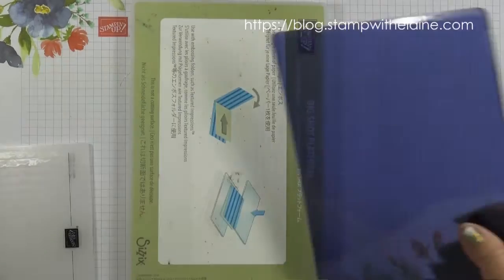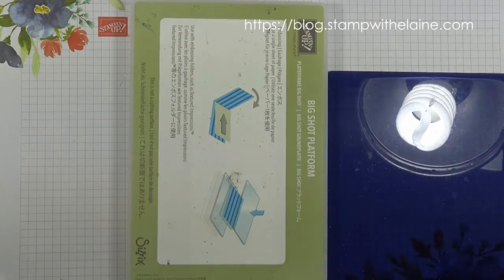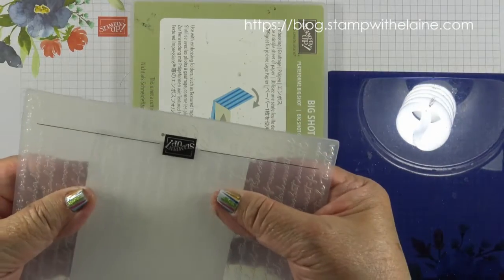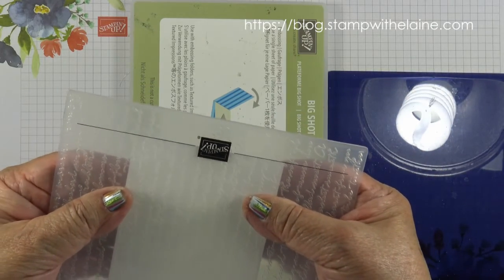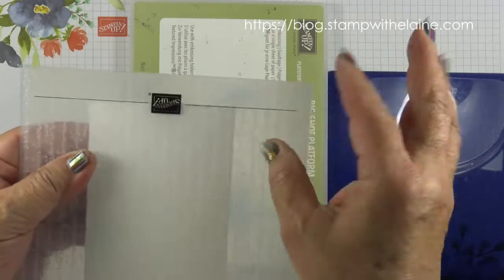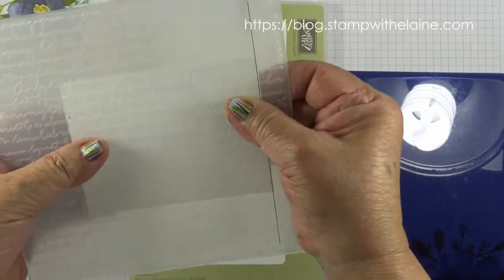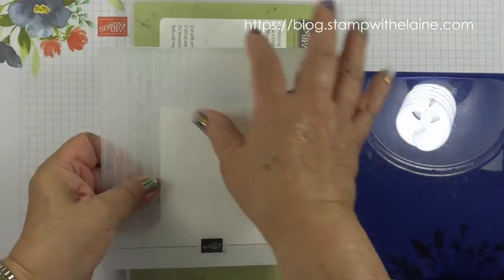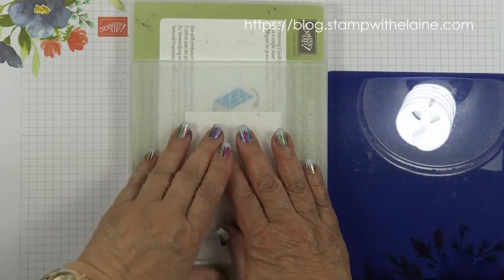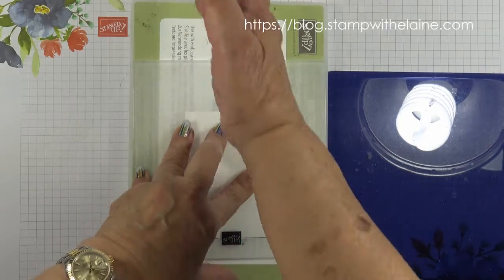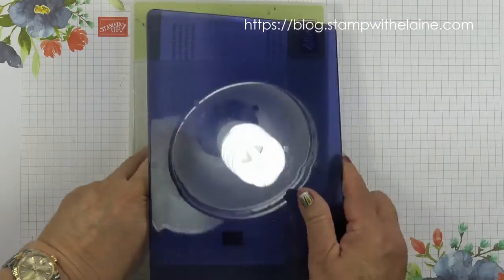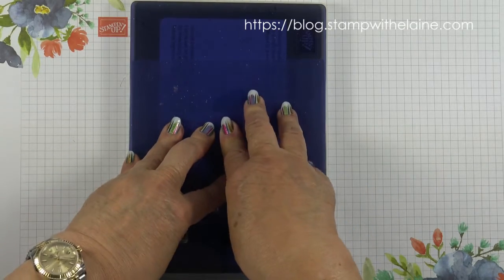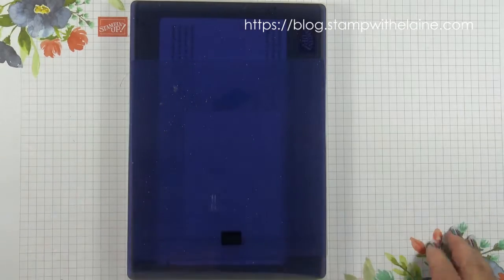So you need your basic platform. Pop your cardstock in. You can line it up with the lines on here to make sure it's straight. And you want the hinged edge running through the Big Shot this way up. As you turn the handle. Then pop your blue plate on top and then run it through the Big Shot.